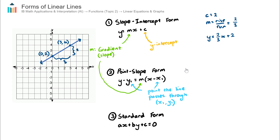Let's now find the equation again, this time using Form 2. You may be wondering what's the point of using Form 2, because Form 1 was so easy. The reason is that sometimes — often, I'd probably say — you're not given the y-intercept. In this question I did give the y-intercept, but often you don't have it, so you can't use slope-intercept form as easily. So let's find it using point-slope form.